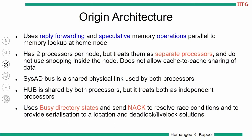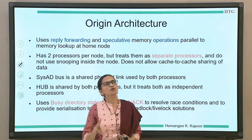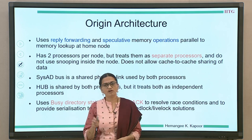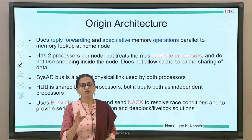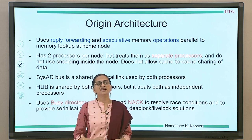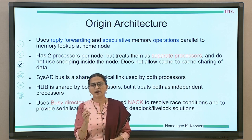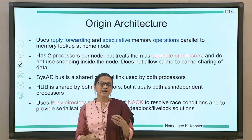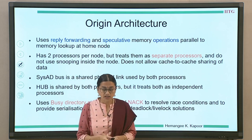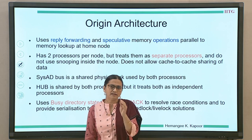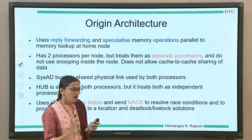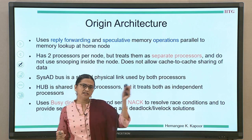The Origin architecture implements a directory protocol. Of the three varieties — strict request-response, intervention forwarding, and reply forwarding — Origin uses reply forwarding. When a request comes to the directory, it does not reply directly to the requester but sends an intervention to the owner, who then sends a reply to both the home and the requester. To optimize latency, Origin also performs a speculative reply: in parallel, it looks up its own memory and forwards that data to the requester just in case it is useful, even if the owner may have a dirty copy that will ultimately be used.